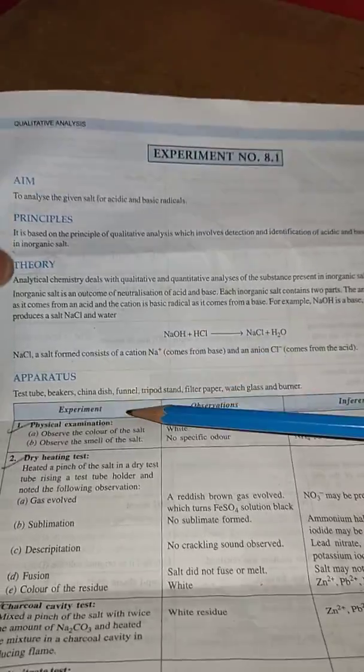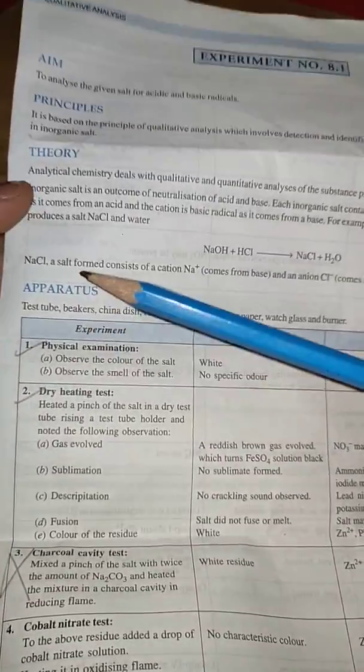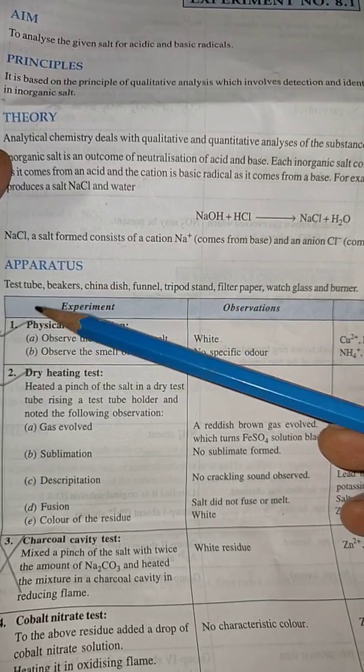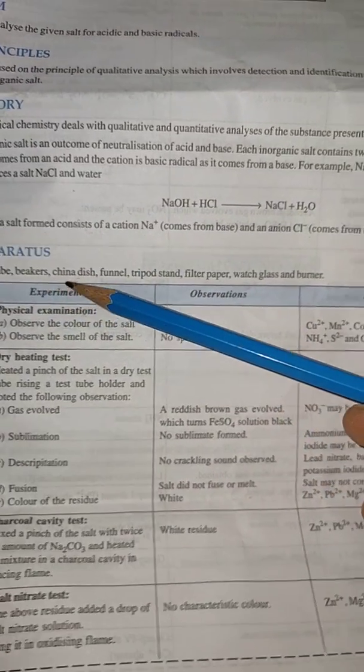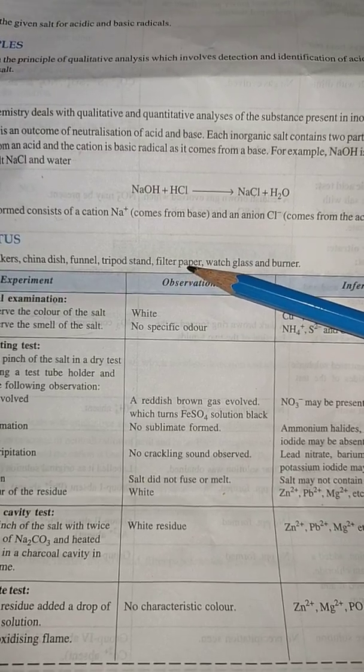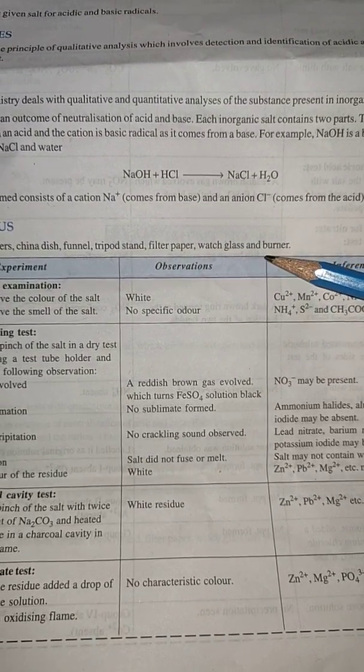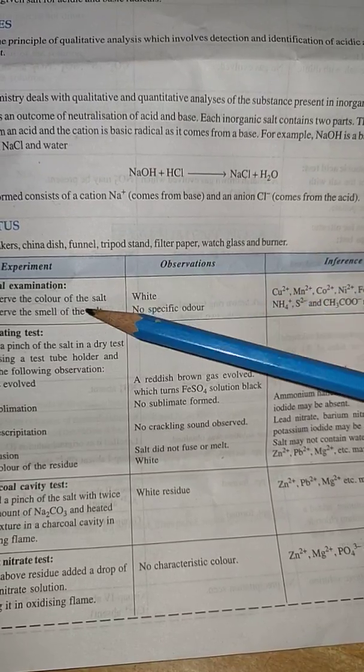Then come to the apparatus. What kind of apparatus are we using in this practical? That is test tube, beakers, china dish, funnel, tripod stand, filter paper, watch glass, and burner.